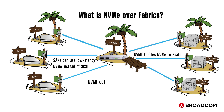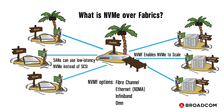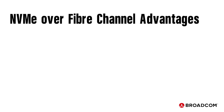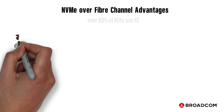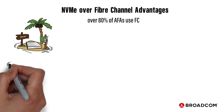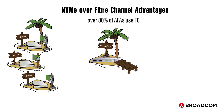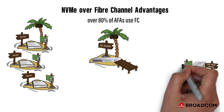NVMe over Fabrics options include Fiber Channel, Ethernet, InfiniBand, and OmniPath. Today, the predominant network of choice for all flash arrays is Fiber Channel, with industry experts estimating that between 80 to 90% of all flash arrays are deployed with Fiber Channel.